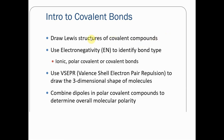Welcome. This long video is an introduction to covalent bonds. You'll learn how to draw structures of covalent compounds, use electronegativity to identify bond type — ionic, polar covalent, or covalent bonds — use VSEPR (valence shell electron pair repulsion) to draw three-dimensional shapes of molecules, and combine dipoles in polar covalent compounds to determine overall molecular polarity.